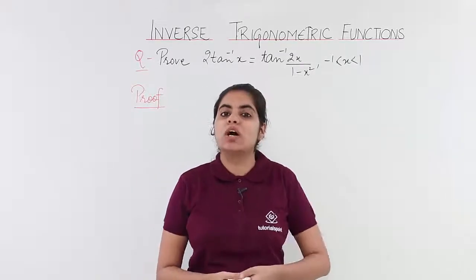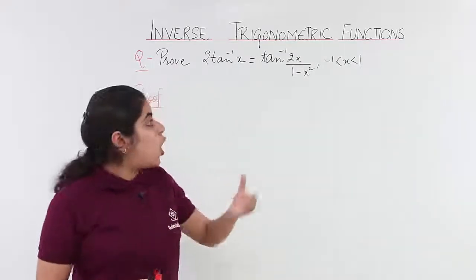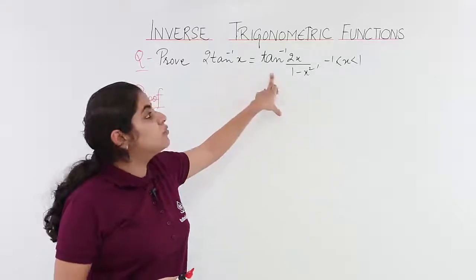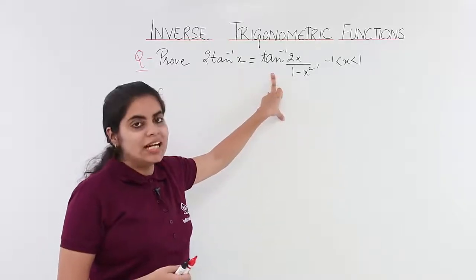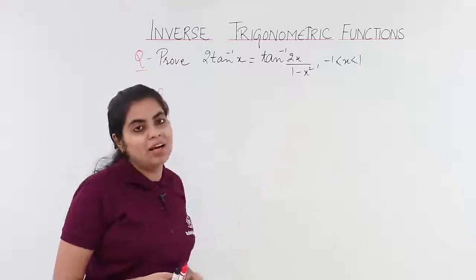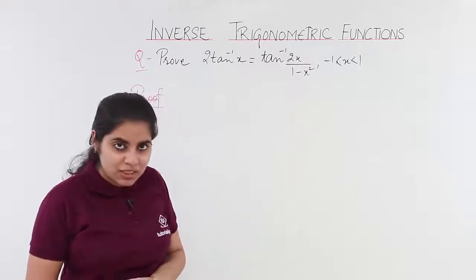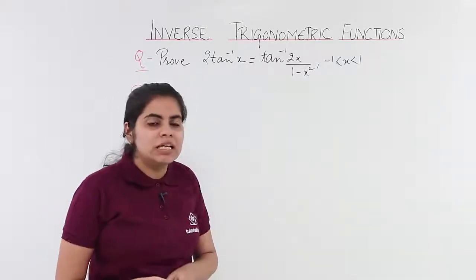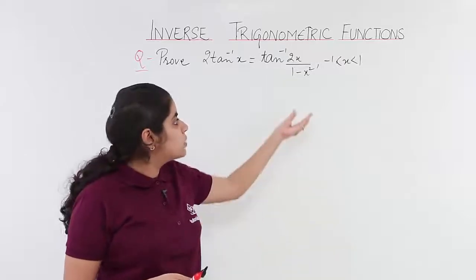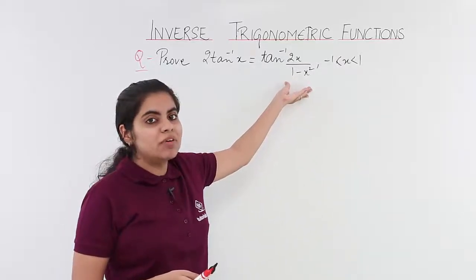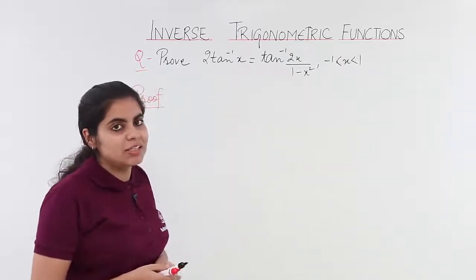While in this video, we are going to see the new formula of 2 tan inverse x in the form of tan inverse, which is tan inverse 2x upon 1 minus x square. Now, how to go about it? The same procedure - we are going to substitute something in place of x. Let's see how to get started with the proof.